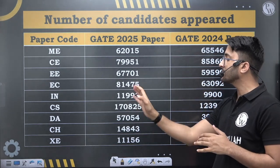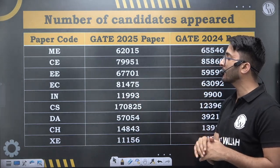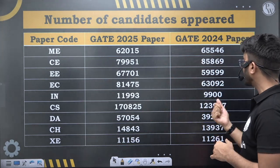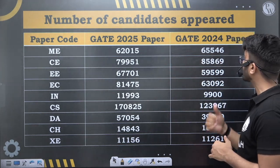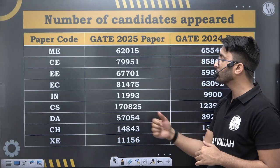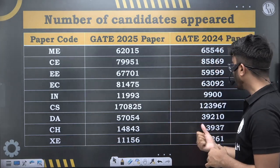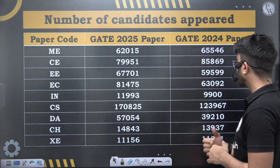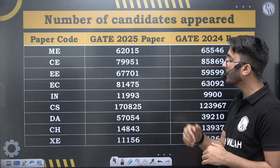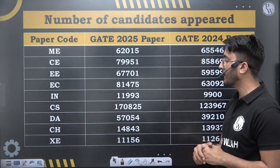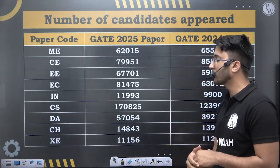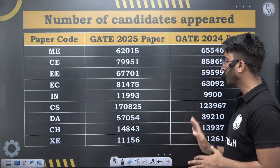For CS this year, there is a big change — 1,70,825 students appeared this year. For DA (Data Science & AI), 39,210 students appeared last year and 57,054 students appeared this year. For Chemical, 13,937 students appeared last year and 14,843 students appeared this year. For XE, approximately 11,000 students appeared both last year and this year.